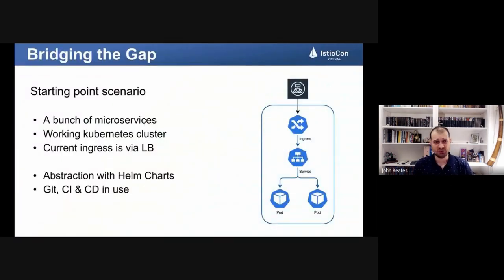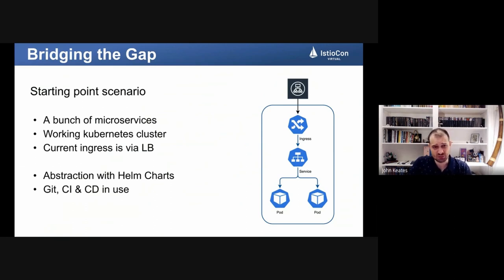We have a starting point, and while it's not possible to represent everyone's infrastructure, let's pretend it's at least similar to this. We might have a bunch of microservices using an abstraction — a Helm chart — as a way to package all the resources for a service. When a developer wants to deploy, they have a versioned Helm chart, they supply values, and the chart deploys all the resources they need in their own namespace. This also requires a working Kubernetes cluster, and in this scenario we have the ingress connected to a load balancer, with all ingresses using a load balancer controller to receive traffic.